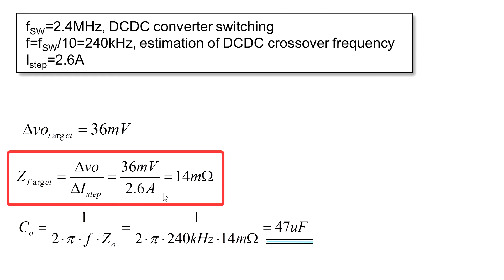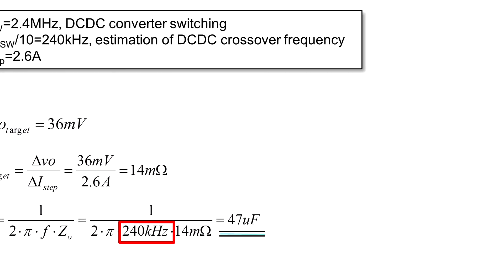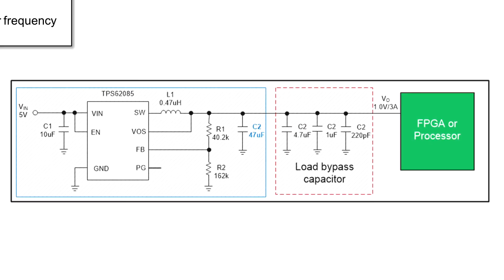Now beyond the crossover frequency of the DC-DC converter the output capacitor dominates the impedance and we can calculate its value.